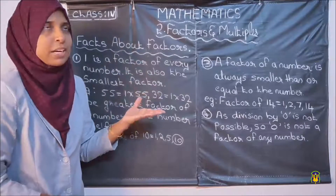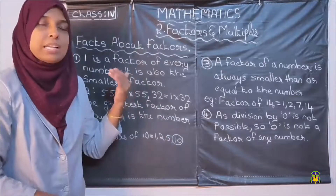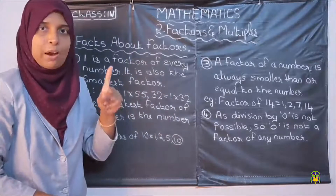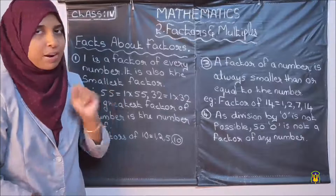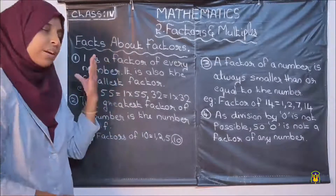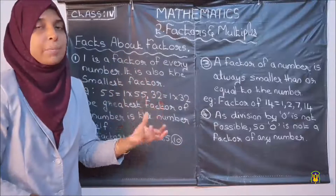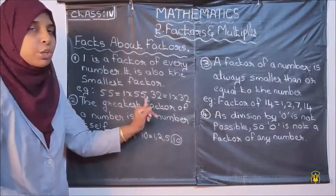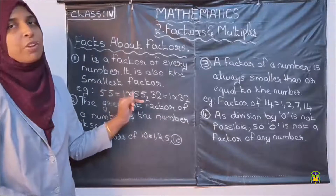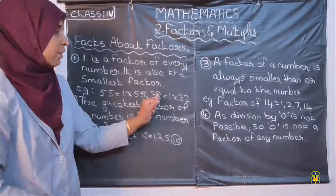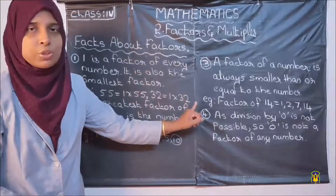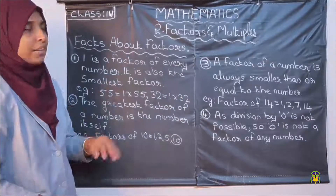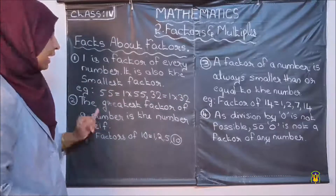For example, what are the factors of 2? 1 and 2 — 1 is the smallest factor. If you take any number, we can write that number as a multiple of 1. If it is 55, we can write 1 into 55, so 1 is a factor and 1 will be the smallest factor. Similarly, for 32, we can write 1 into 32, and 1 is the smallest factor. That is the first point.